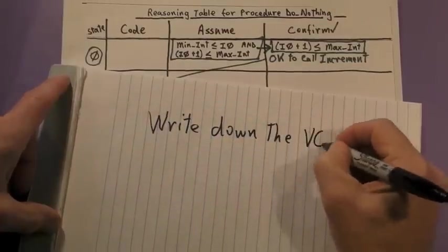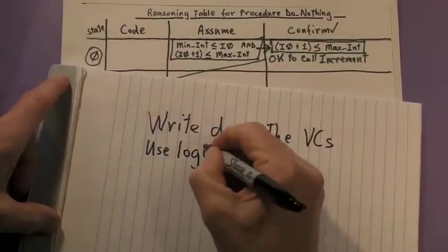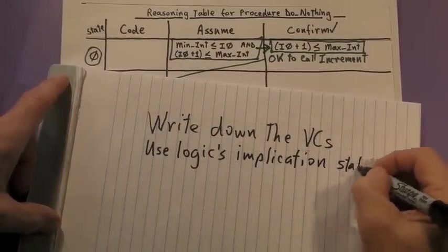Now, we're finally going to write down the VCs, and we're going to use logic's implication statement to do it.